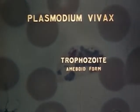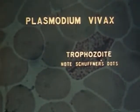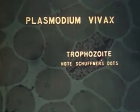The amoeboid form of this maturing trophozoite and the enlarged red cell completes its cycle in 48 hours.